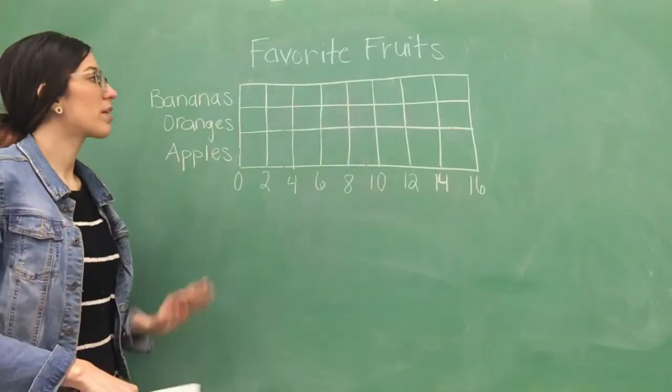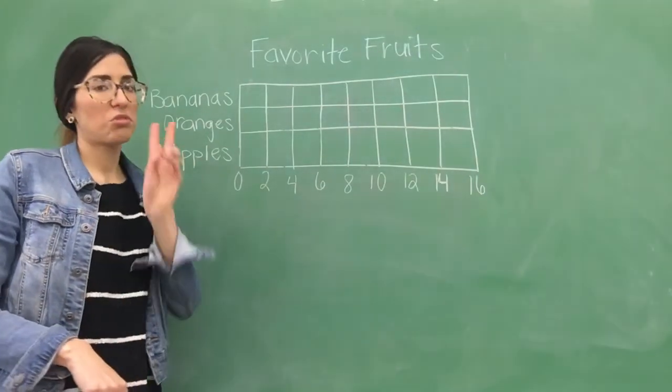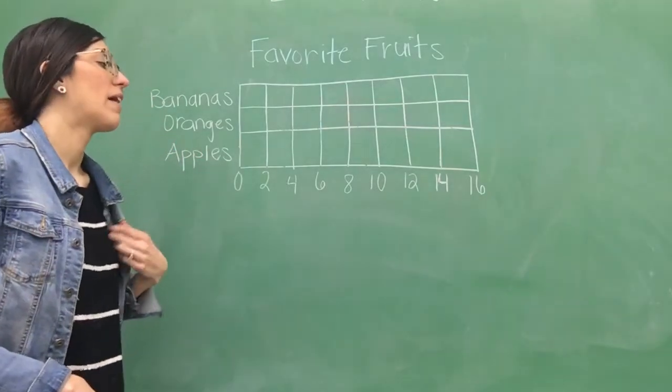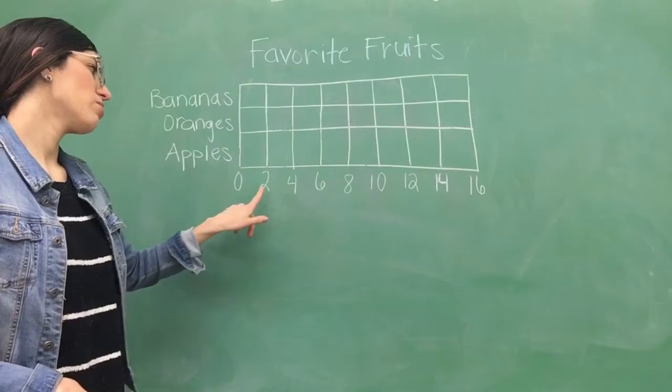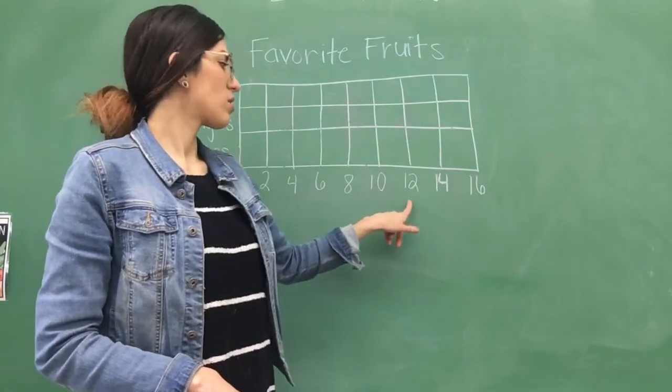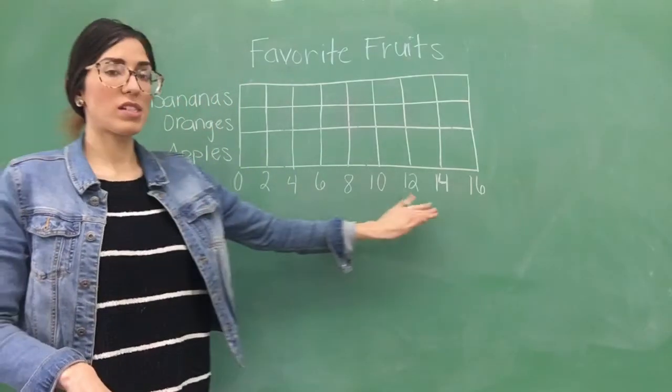Very good. Now, on our bar graph, we have a scale of 2. So, what numbers do you see? Very good. We see 0, 2, 4, 6, 8, 10, 12, 14, and 16. Those are the scale numbers.